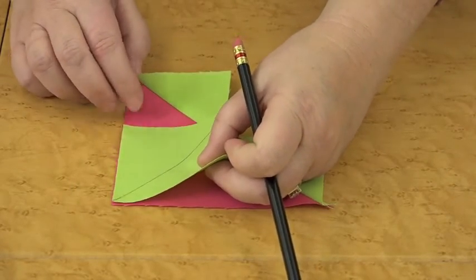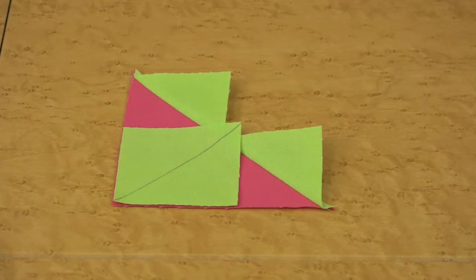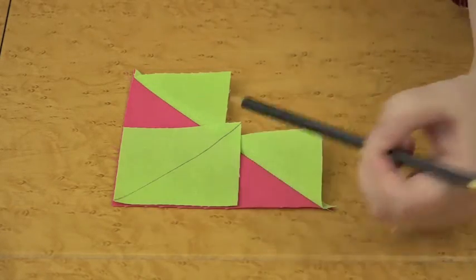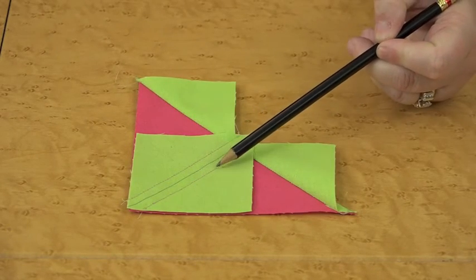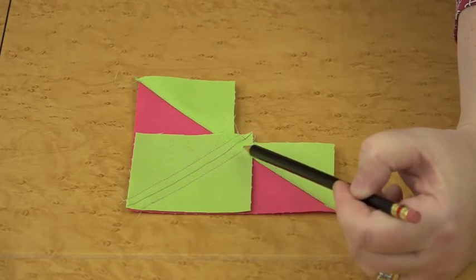Okay, now you've pressed these back, we're going to take our third square that we have marked with the diagonal line and place it in that corner again with the diagonal line going this direction. Take it to your sewing machine and sew a quarter of an inch on each side of that diagonal line.